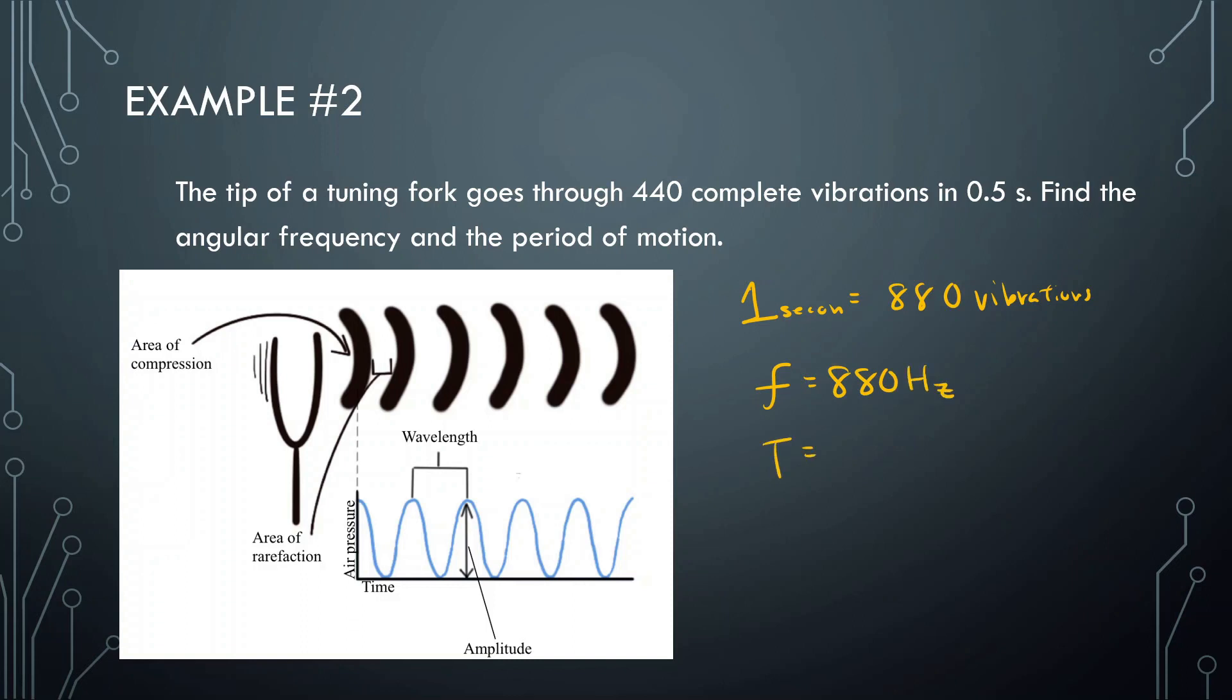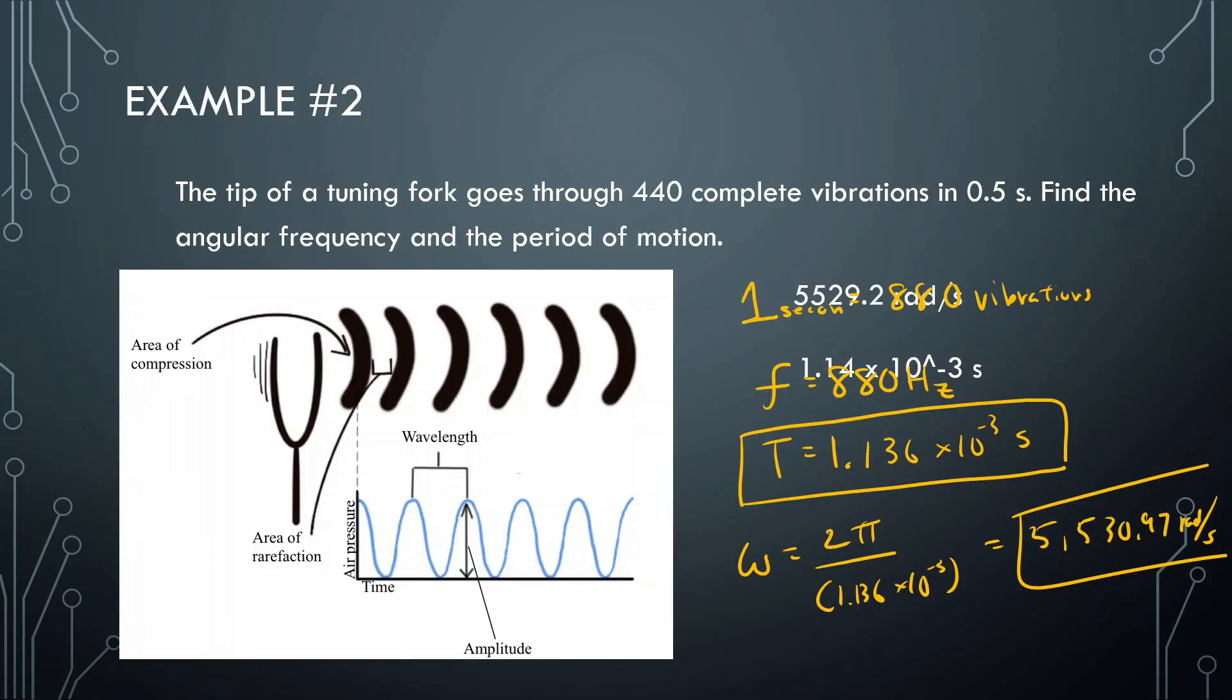Now that we know that, we can find what the period is by just doing 1 divided by 880, and we get 1.136 times 10 to the negative 3 seconds. And as you can imagine, a tuning fork is vibrating very quickly, so we're going to get a tiny number for that. And then the angular frequency omega is equal to 2 pi divided by this 1.136 times 10 to the negative 3, and what we get is 5,530.97 radians per second.